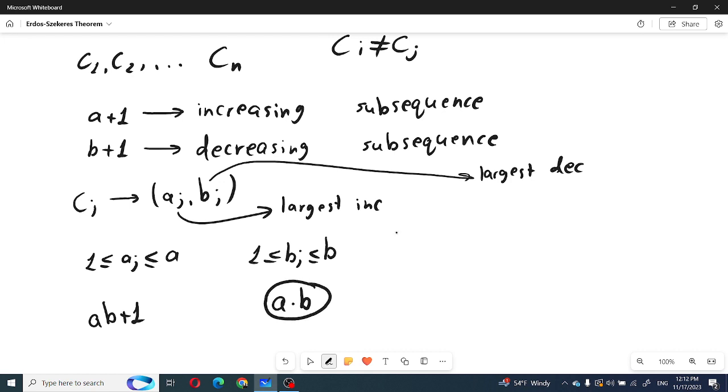Now if we apply the pigeonhole principle for these ab plus 1 elements, we can see that there will exist two indices i and j